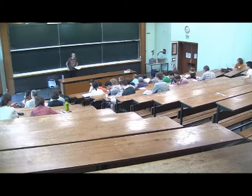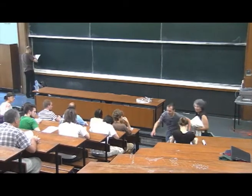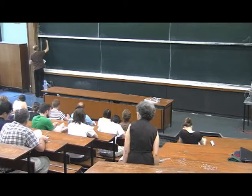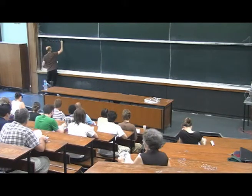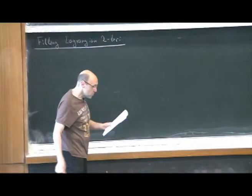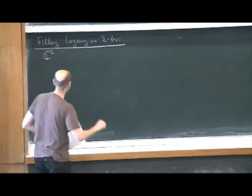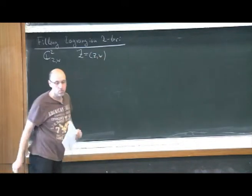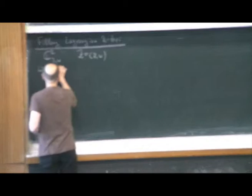We start our last lectures today with Sergei. Now, filling Lagrangian tori. Consider the following situation. Everything is in C². I will denote the coordinates Z and W. Capital Z is ZW. This is the standard symplectic form of C².